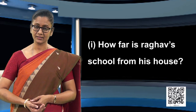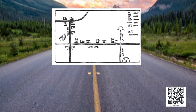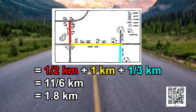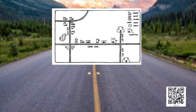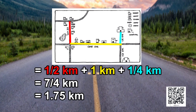The first question: how far is Raghav's school from his house? The distance between Raghav's school and house equals one-half kilometer plus one kilometer plus one-third of a kilometer, which is equal to eleven-sixths kilometers, or 1.8 kilometers. The distance between the sister's school and the house is equal to one-half kilometer plus one kilometer plus one-fourth of a kilometer, which equals seven-fourths of a kilometer, or 1.75 kilometers.